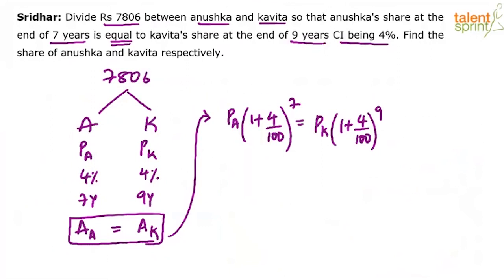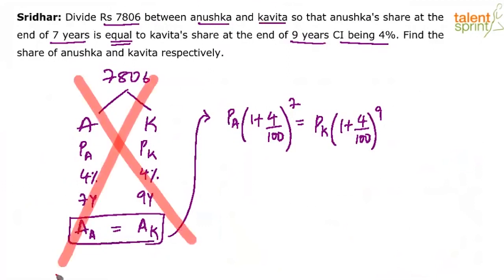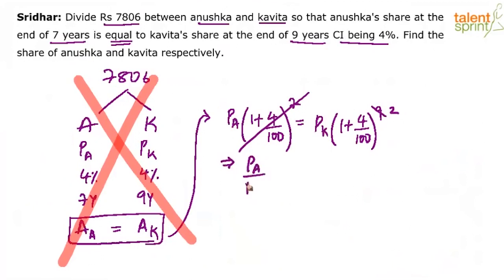If you understand the question well, you would directly start with this equation in the exam. From the equation, (1 + 4/100)^7 cancels from both sides, leaving (1 + 4/100)^2 on the right. So PA/PK = (1 + 4/100)² = (104/100)² = (26/25)².